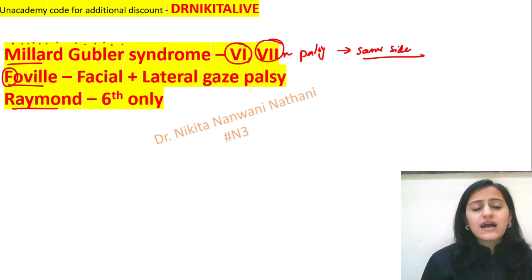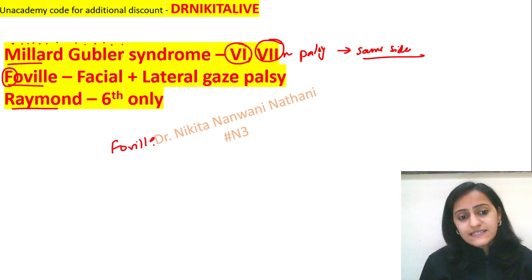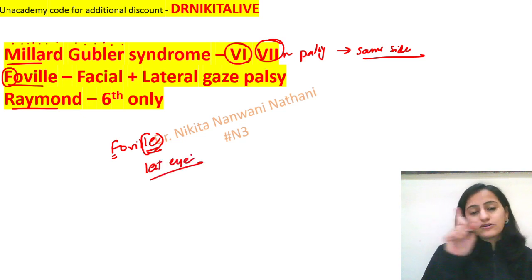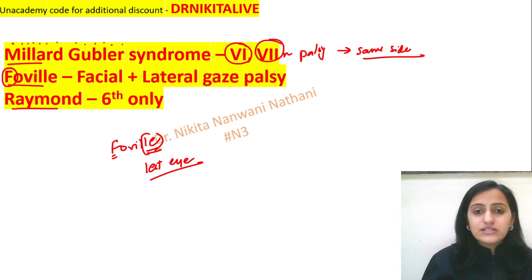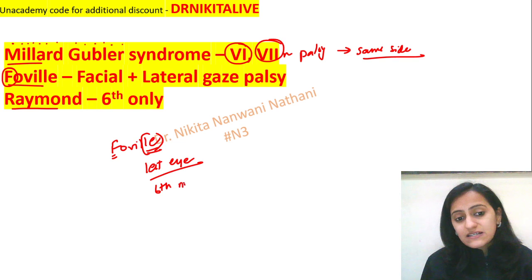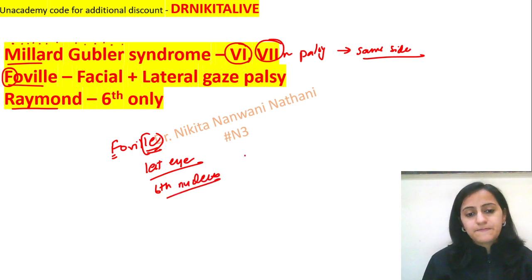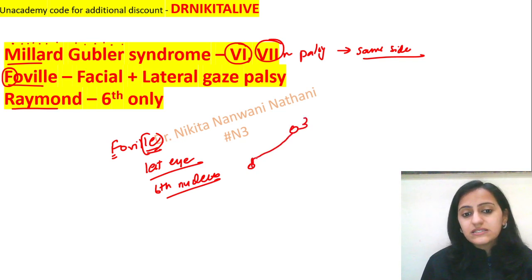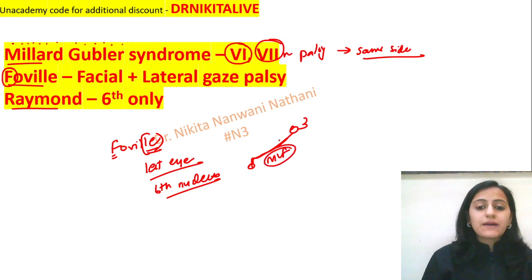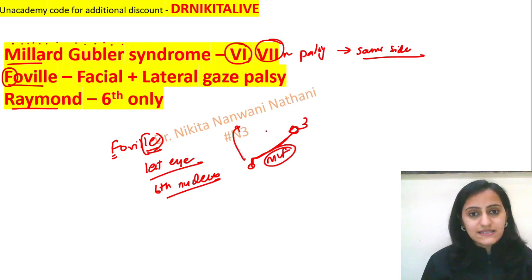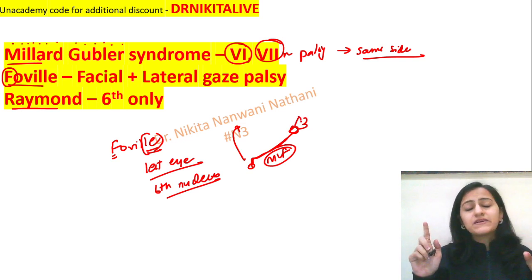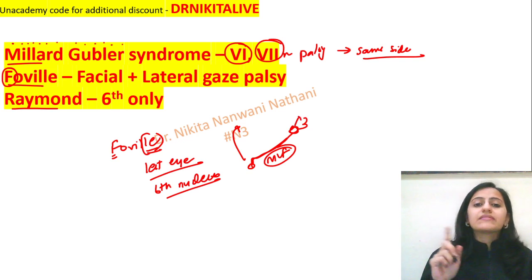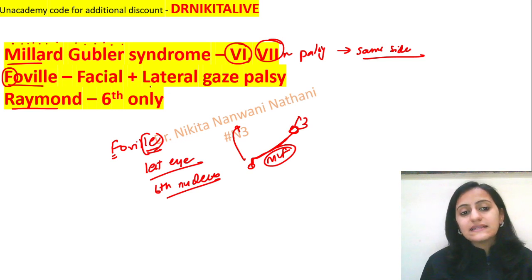Foville syndrome also has facial involvement. Remember: 'Foville' contains 'F' for facial and 'LE' for lateral eye movement — meaning horizontal gaze is gone. The horizontal gaze palsy occurs because it is the sixth nerve nucleus that is affected in Foville. The sixth nerve connects with the opposite side third nerve via the MLF, causing same-side sixth nerve palsy, opposite-side third nerve palsy, and therefore horizontal gaze palsy.